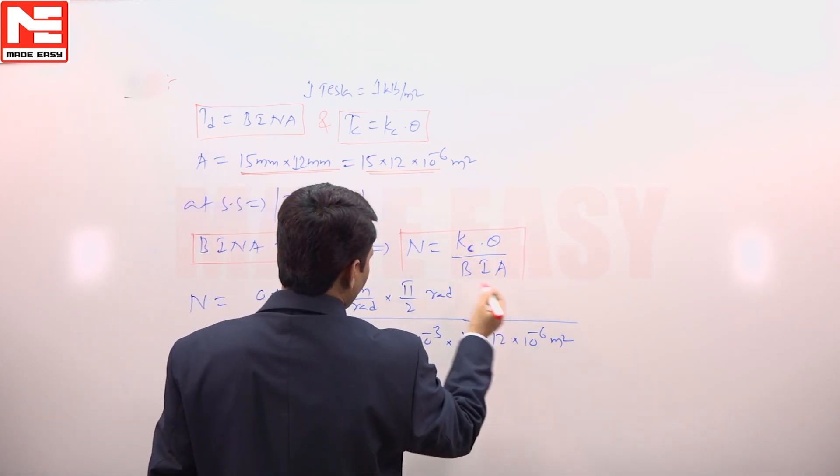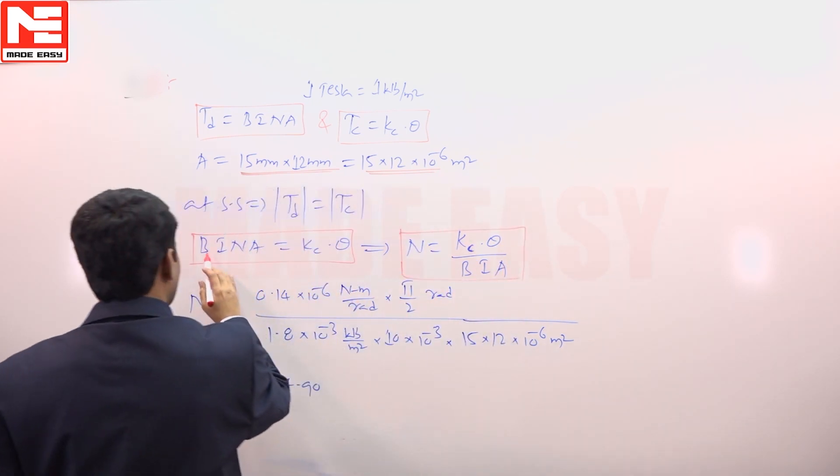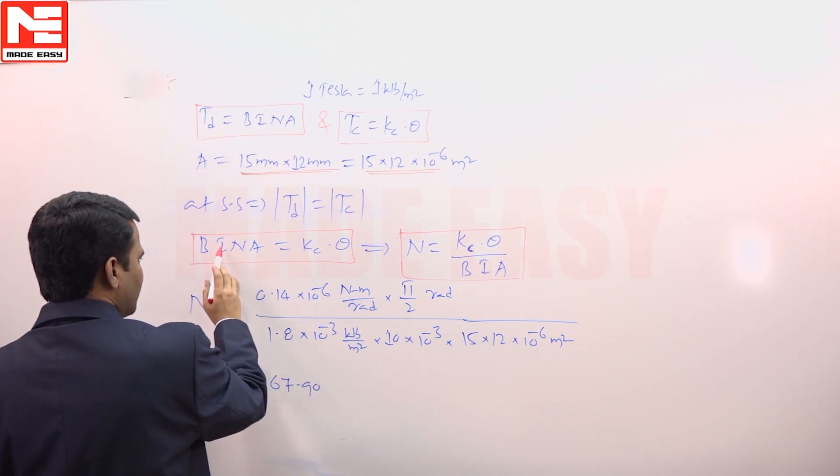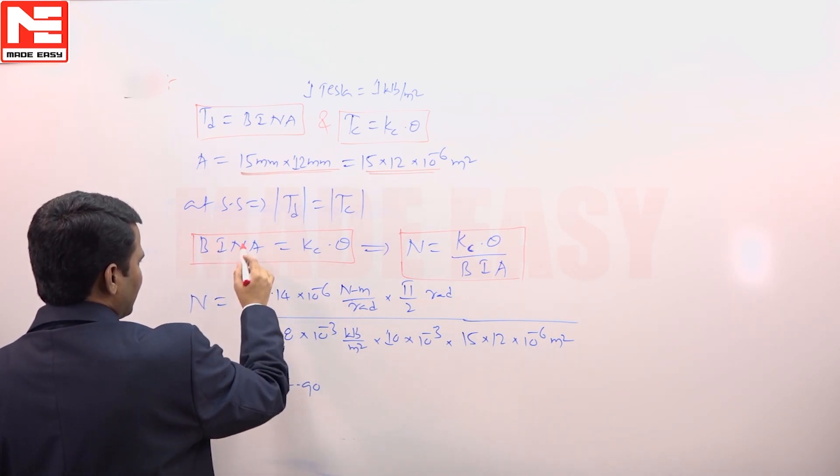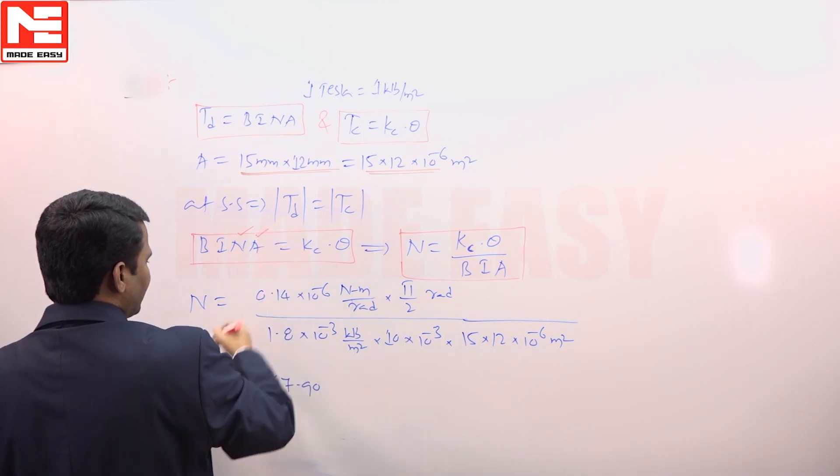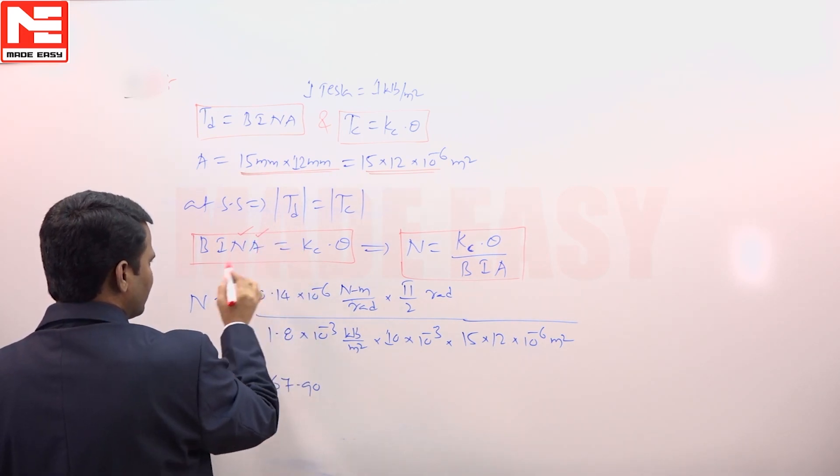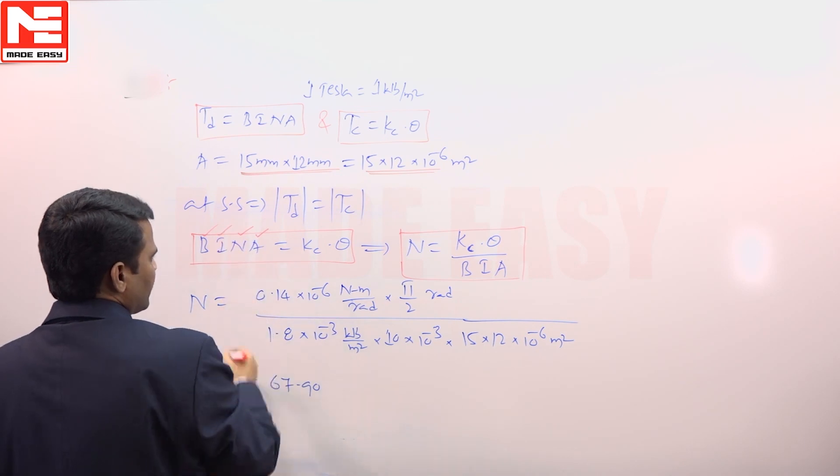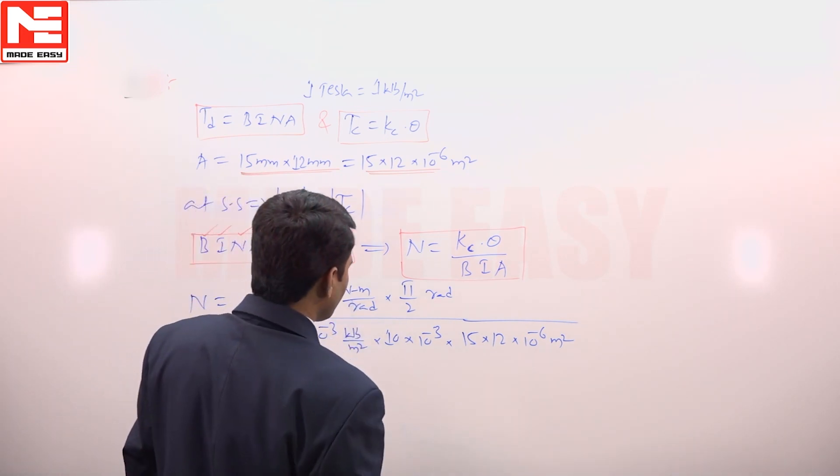Here B is called flux density, I is called current flowing through copper coil, N is called number of turns and A is area of cross section of the coil. Coil is in rectangular shape. Theta is the deflection usually in radians.